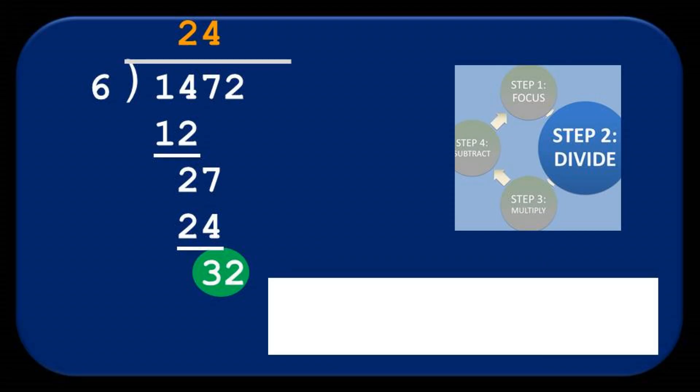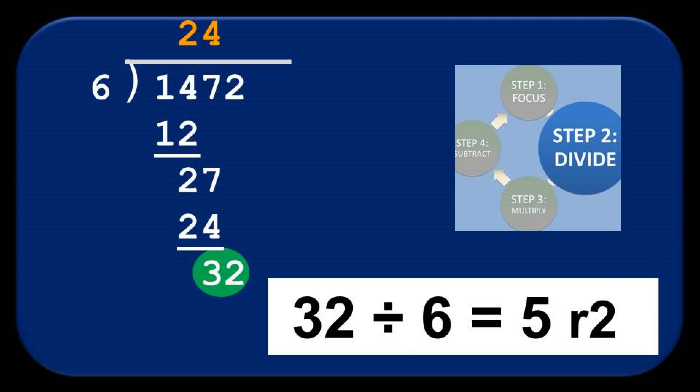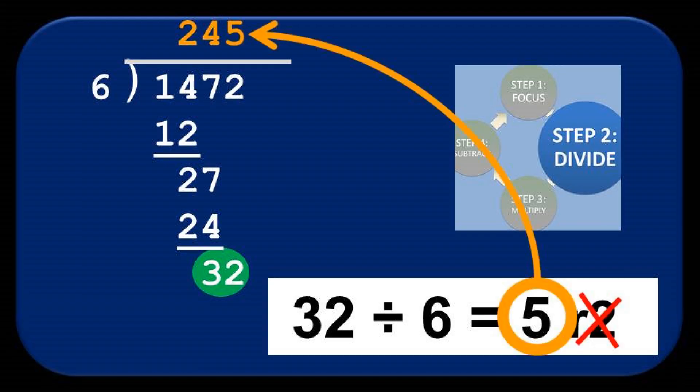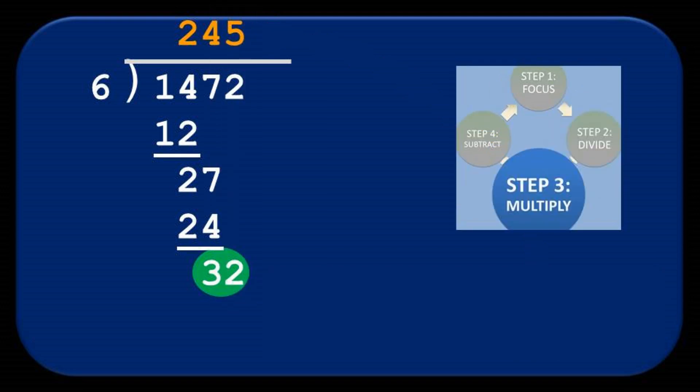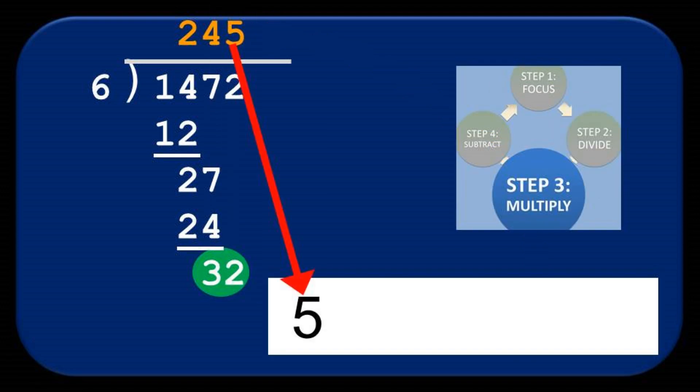Once again, we take the focus and divide it by the divisor. 32 divided by 6, which is equal to 5. And, as always at this point, we ignore the remainder. We write this digit on top of the rooftop, carefully lined up over the focus, and multiply it by the divisor.